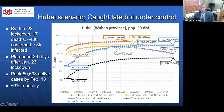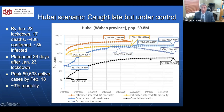The Hubei scenario is one we're wondering whether we may face, both as a nation and as a state. It was caught late but brought under control with aggressive actions starting January 23. They maxed out at around 50,000 active cases and then it's down to 9,557 as of a couple days ago. They plateaued really 26 days after their January 23 lockdown and had about a 3% mortality rate. If you shift left by 21 days of the mortality curve and divide by 3%, you get this yellow curve which actually nicely models what occurred.